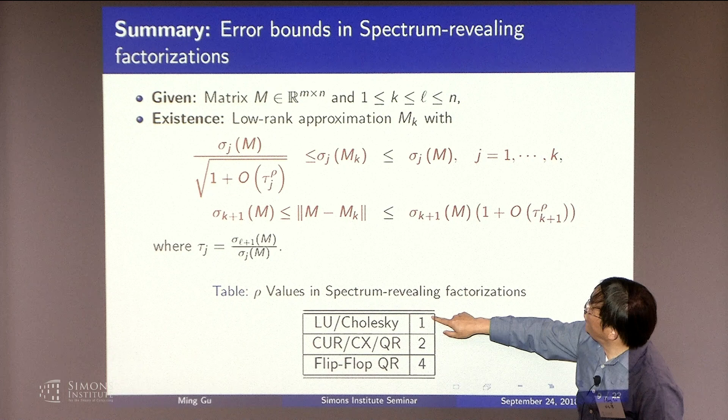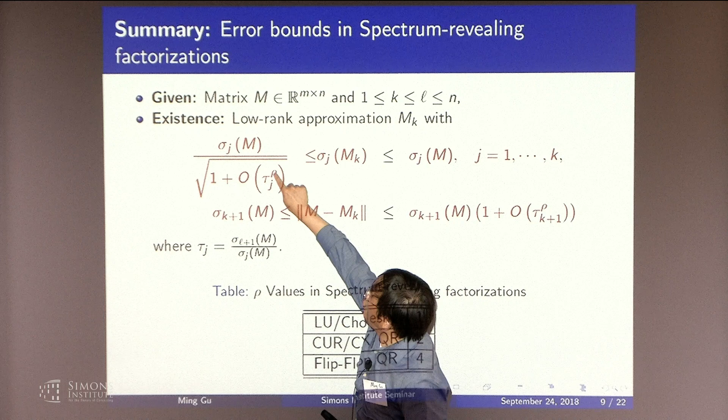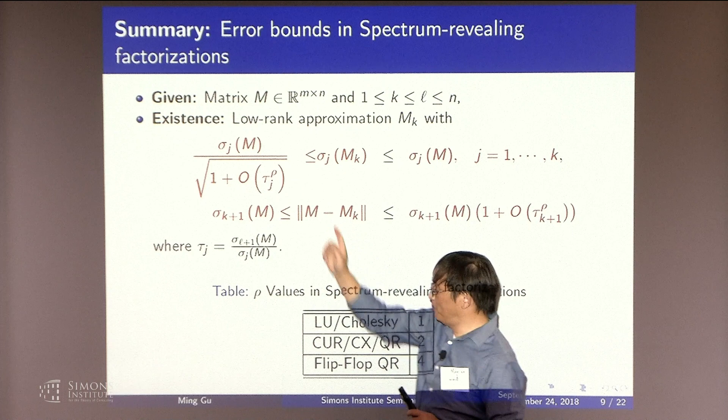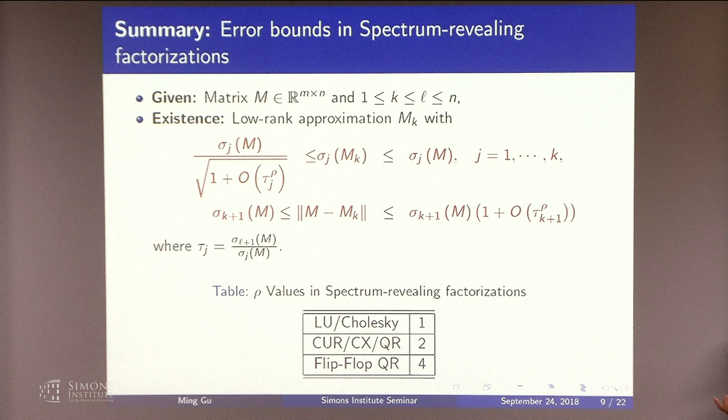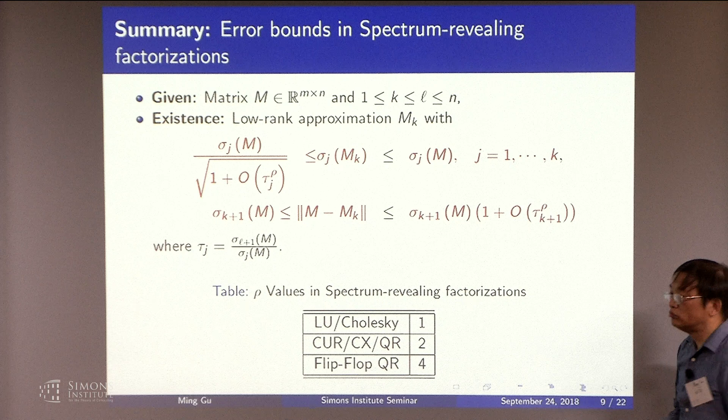If you do QR, this tau value is 2. If you do this flip-flop QR, this value of tau is 4. But if you do LU or Cholesky, it's 1. So, it's much less accurate. If you do CX or CUR, they're just as accurate as QR.